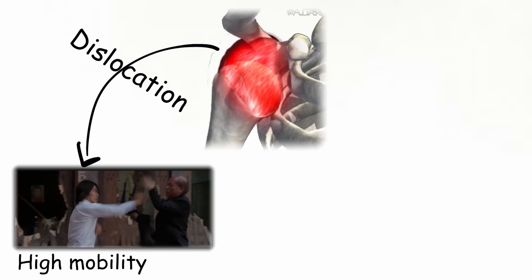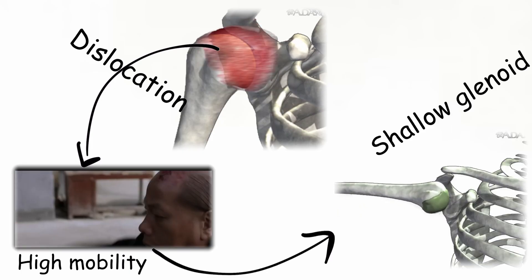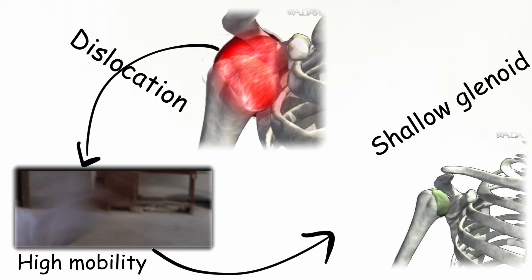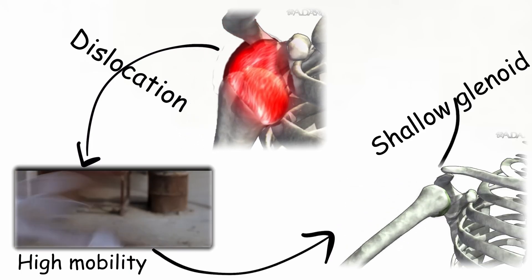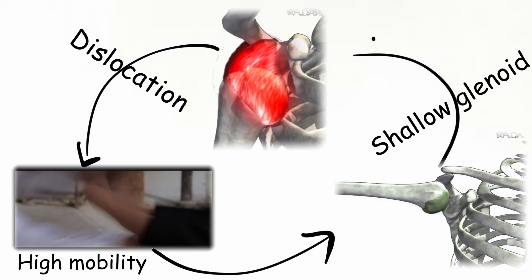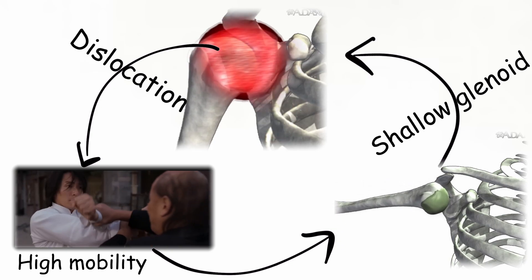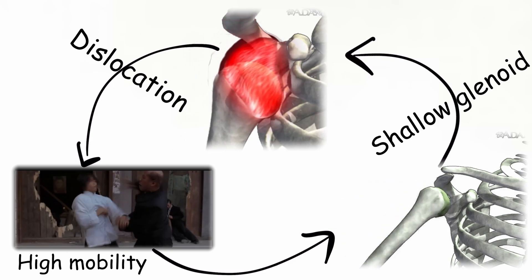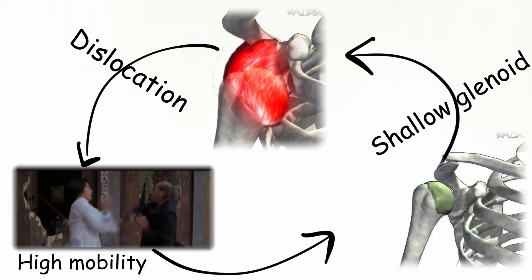It is most commonly dislocated because it is highly mobile, and it is highly mobile because of its shallow glenoid cavity — these factors create a triangular relationship going back and forth. So it is a high-risk instability joint.